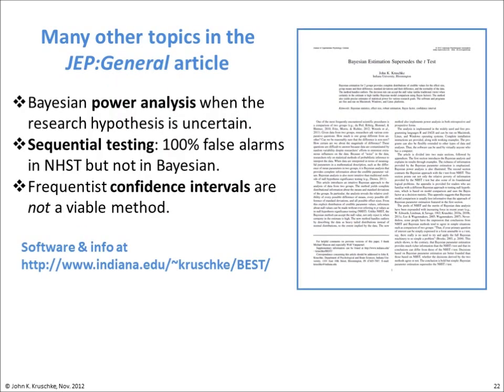Many other topics are addressed in the JEP General article, such as Bayesian power analysis, which applies even when the research hypothesis is uncertain, and sequential testing of accumulating data, which can lead to 100% false alarms in NHST but not in Bayesian estimation, and a discussion of why frequentist confidence intervals are not a viable method.